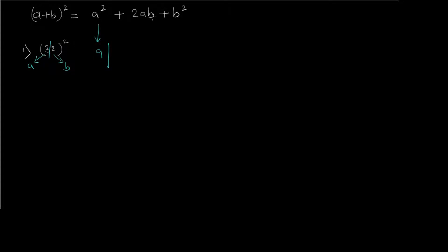Then the center part is 2ab, so 2 × 3 × 2, which would be 12. And b² — that is 2² in this case — would give us 4. So we have three terms: 9, 12, and 4.